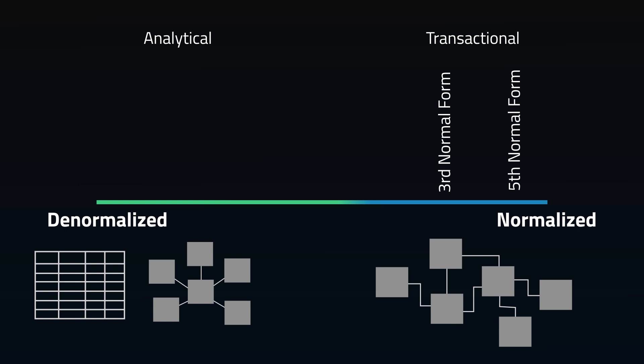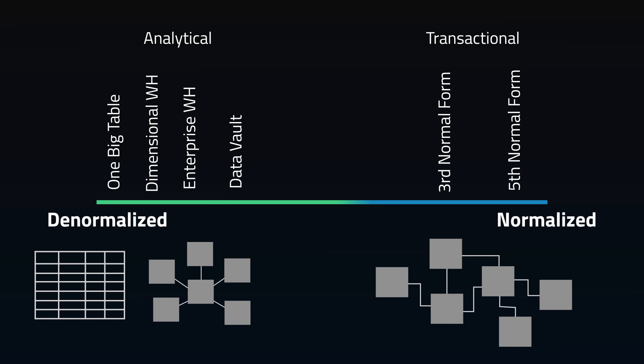For these analytical systems, there are a few different models that have been popular: the top-down enterprise data warehouse, the most common dimensional data warehouse, data vault, and the one big table approach. Today we're going to focus on one big table and dimensional warehouses.